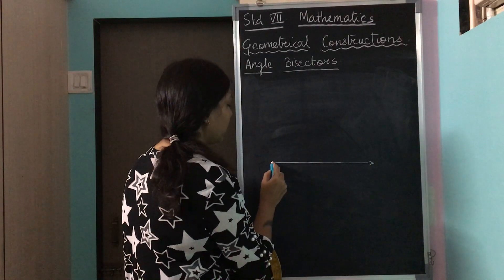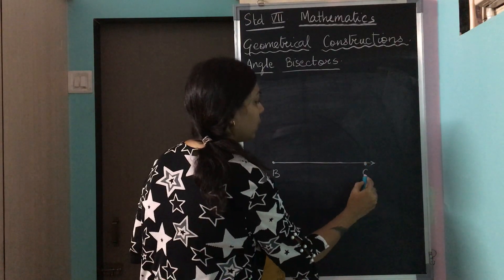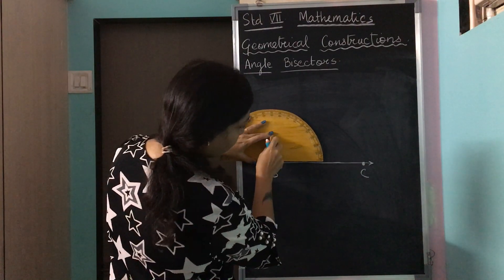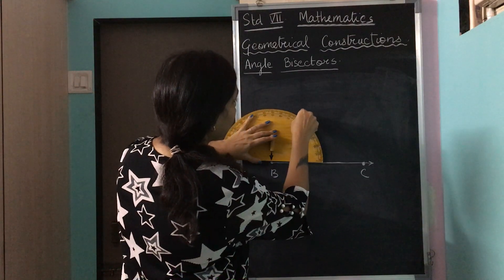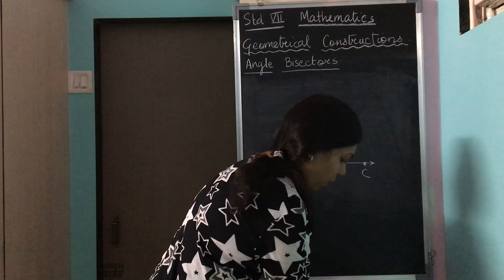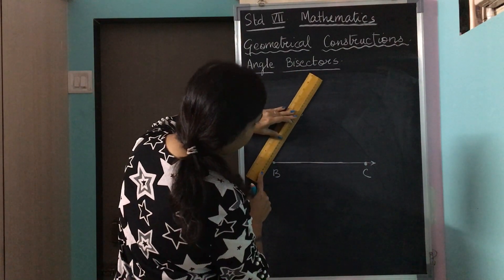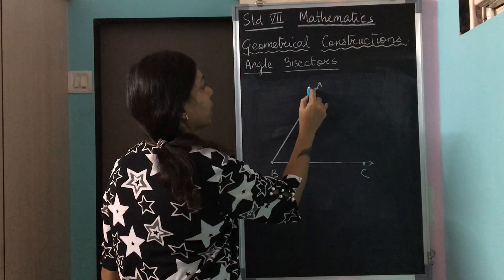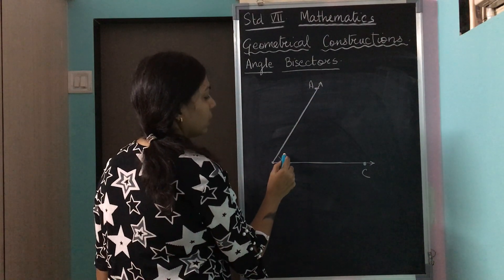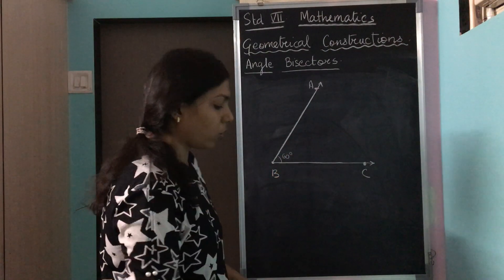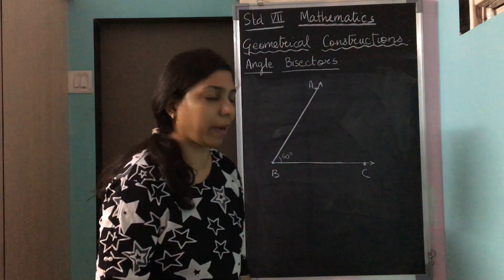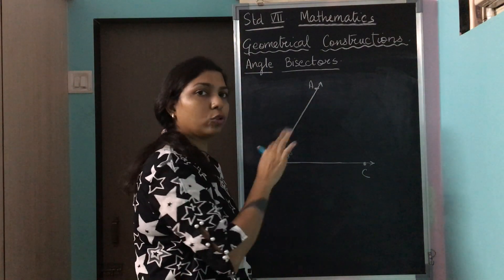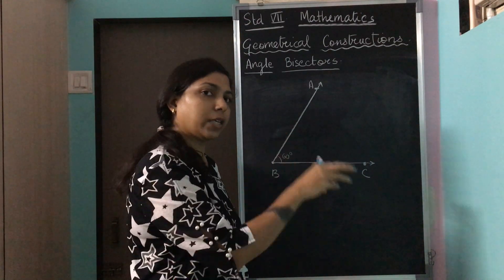We draw the first ray and give it a name as B. We want to draw an angle of 60 degrees, so we keep the zero mark on point B and measure 60 degrees. We put a mark at 60 degrees and connect that mark to point B. The measurement of this angle is 60 degrees. Now we want to draw an angle bisector. Bisector means two parts — we want to divide this angle into two equal parts of 30 degrees each.